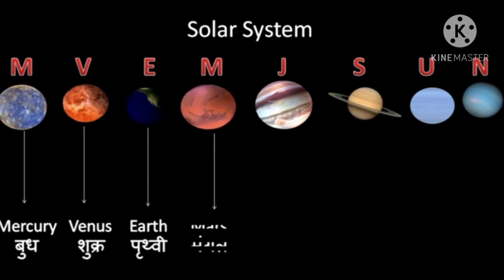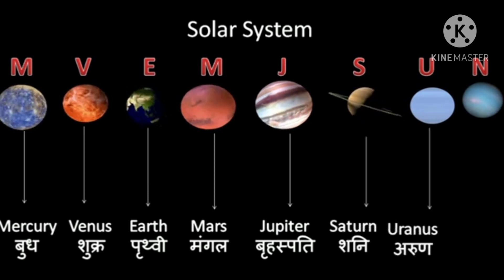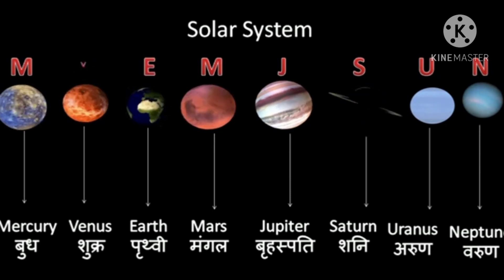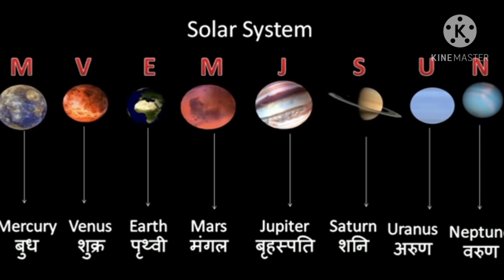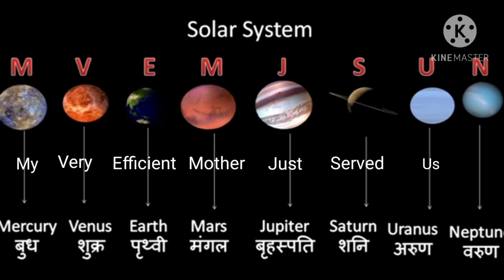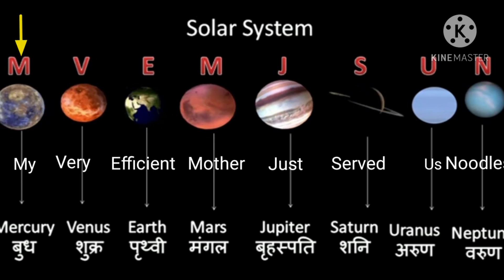Saturn, Uranus and Neptune. To remember the names of planets in order of their increasing distance from the sun, just keep in mind this planetary mnemonic: My Very Efficient Mother Just Served Us Noodles — M for Mercury, V for Venus, E for Earth, M for Mars, J for Jupiter, S for Saturn, U for Uranus, and N for Neptune. This way you can remember all the names of the planets in order of their increasing distance from the sun.